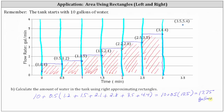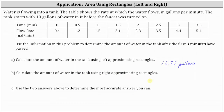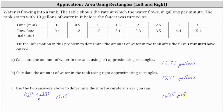Using the right-sided rectangles, the amount of water in the tank is 17.75 gallons. Because the flow rate is increasing over this time interval, the left approximating rectangles give an underestimate and the right approximating rectangles give an overestimate. So for Part C, for the most accurate answer, we take the average of the two: (15.75 + 17.75) divided by 2 equals 16.75 gallons of water in the tank after the first three minutes.